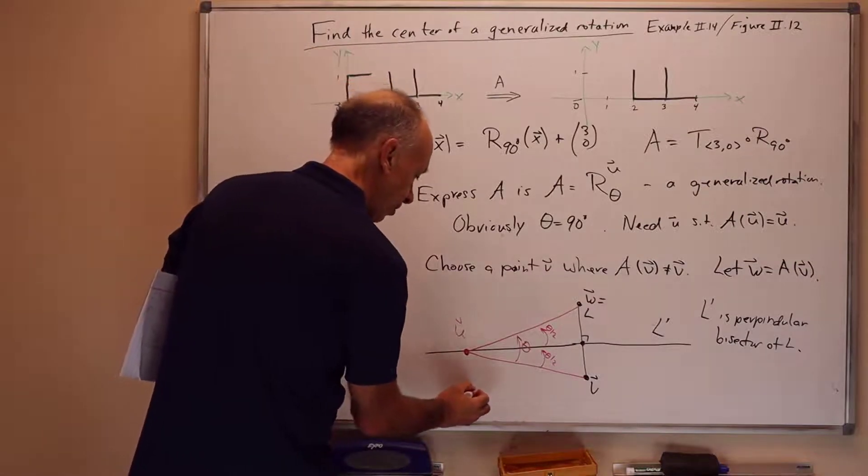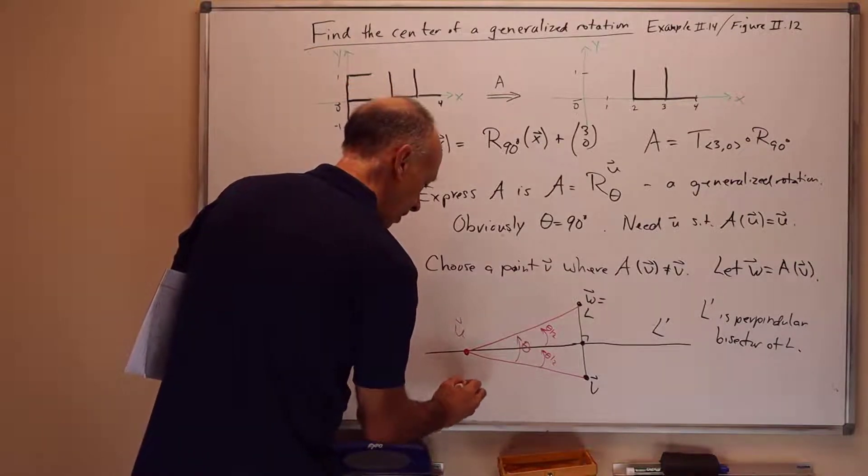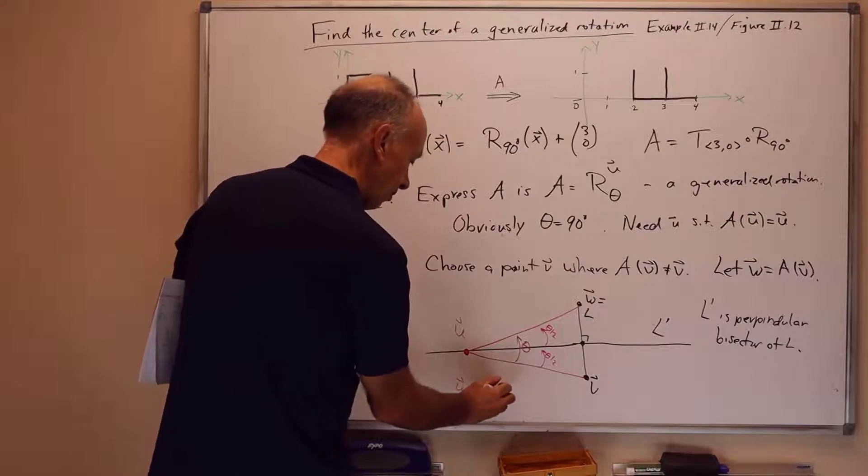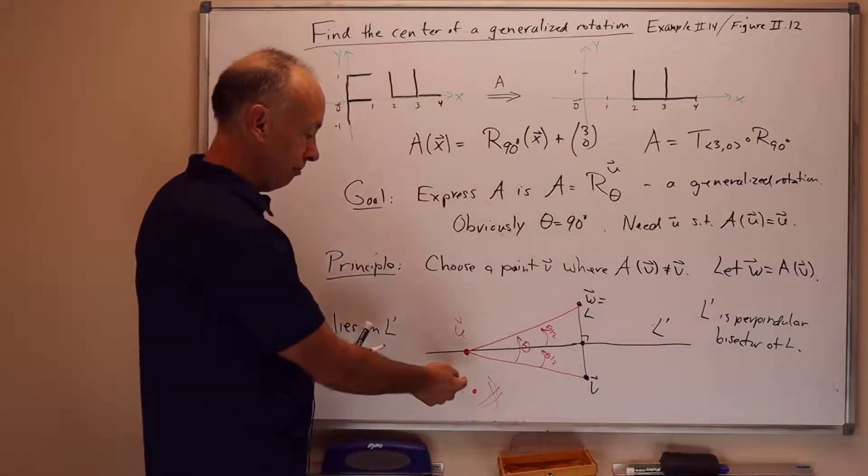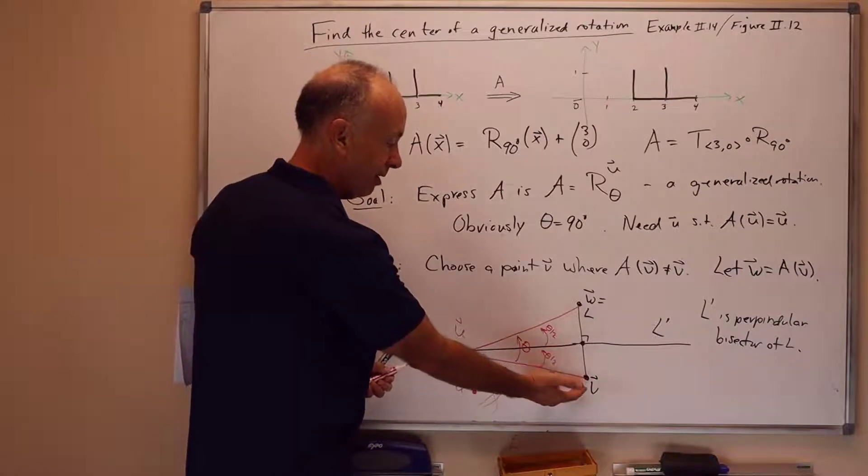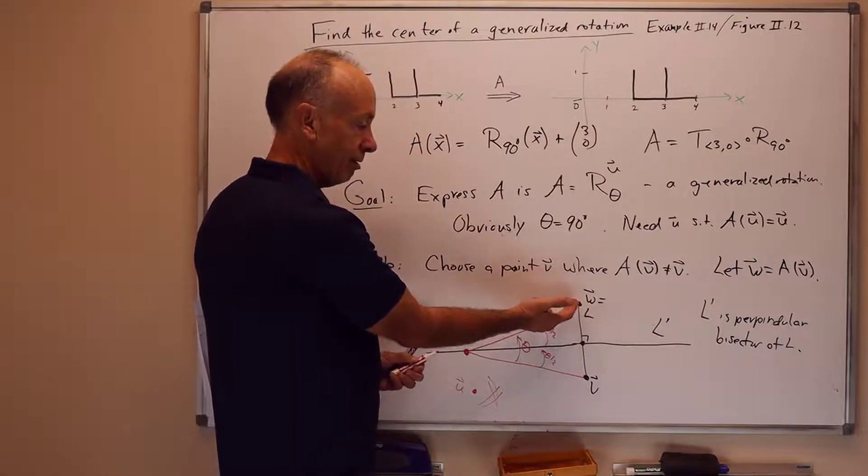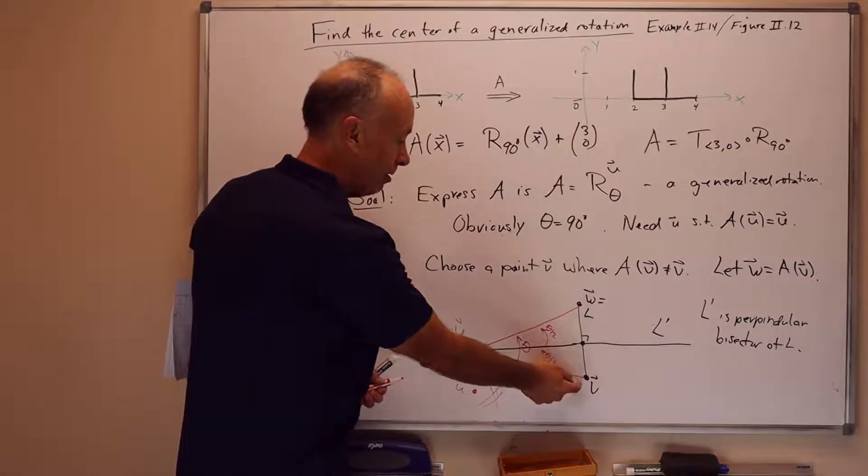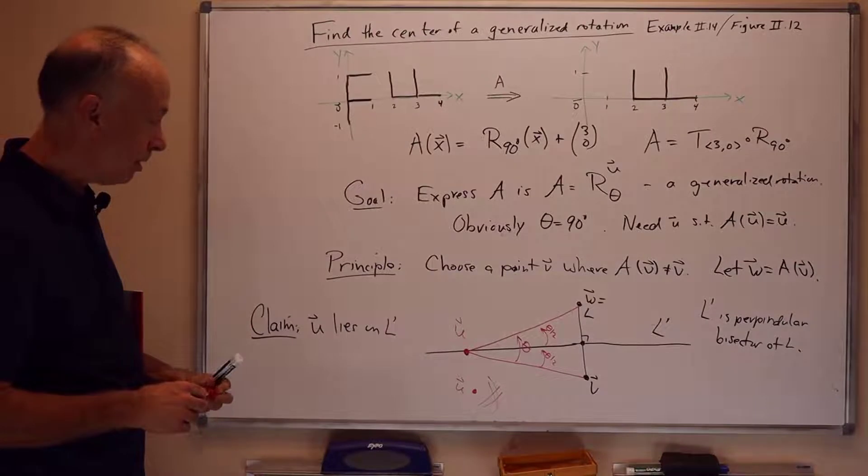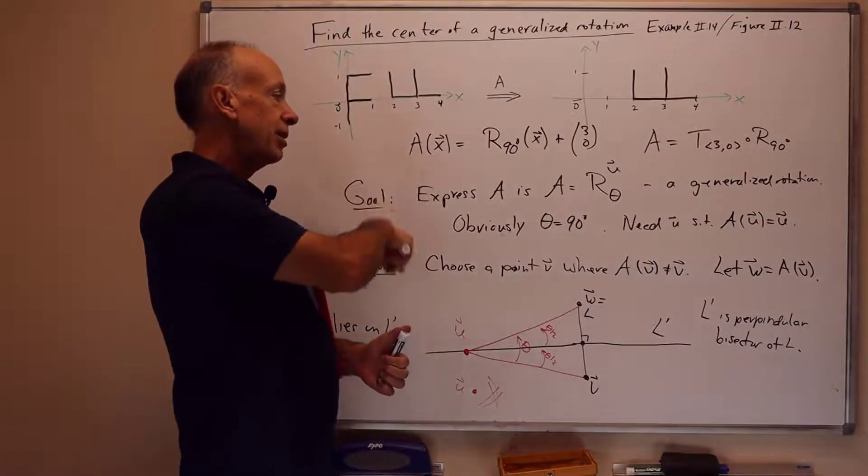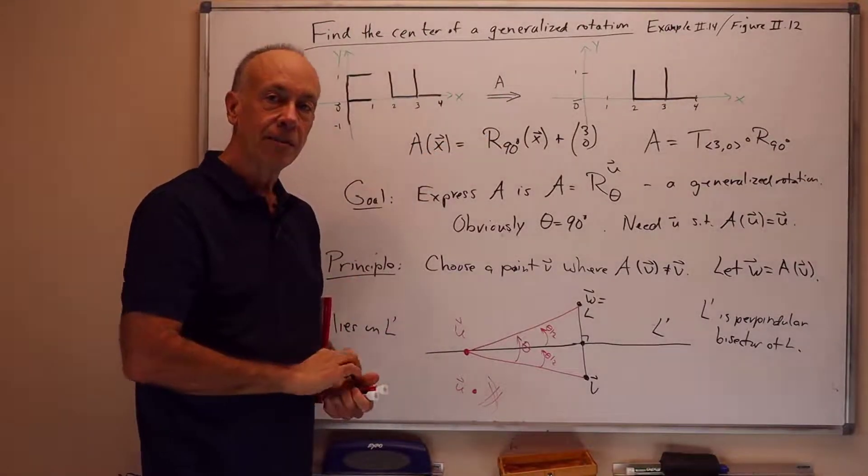And the claim here is that you couldn't have u down here. This doesn't work. Put a big x mark there. It doesn't work. Because if you rotate it around this u, it wouldn't take v directly across to its reflection across the line l prime. It would take v someplace up here instead. So we'll use this principle to find the center rotation up above.